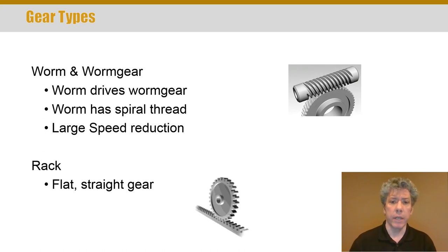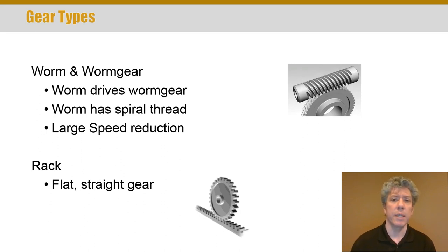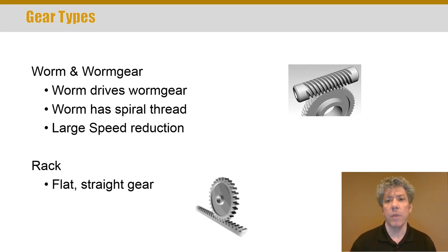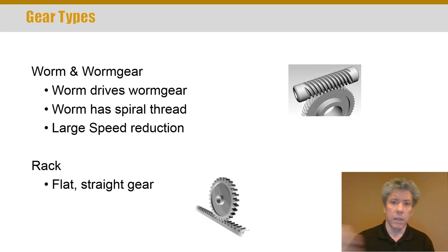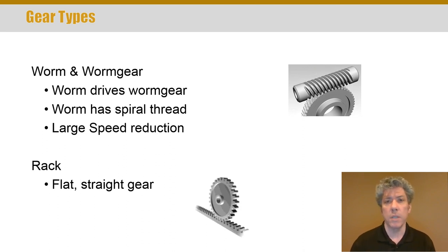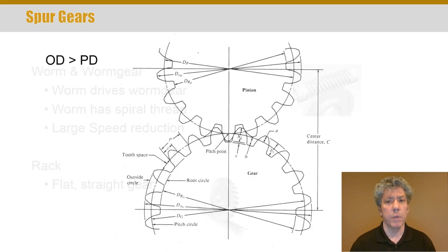Worm and worm gearing is another type of gear. A lot of people look at the rotating threaded element and call it the worm gear, but that is actually called the worm. The more traditional-looking gear item is the worm gear. So the worm is that long cylinder and the gear is the thing that looks like a gear. The worm typically drives the gear. The worm has a spiral-type thread and these are typically used where you need large speed reductions.